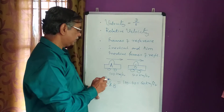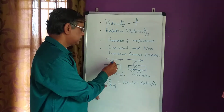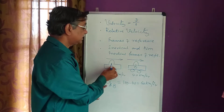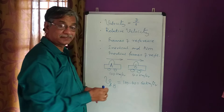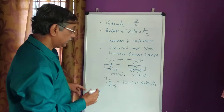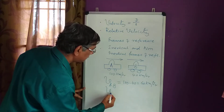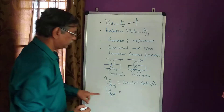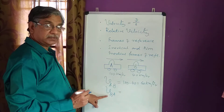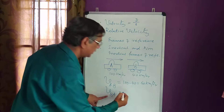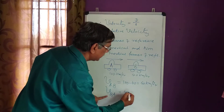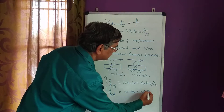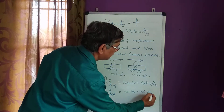So, velocity of A with respect to B. If I write the velocity of B with respect to A, this is the relative velocity of B with respect to A. I have to write 40 minus 100, that is minus 60 kilometers per hour.